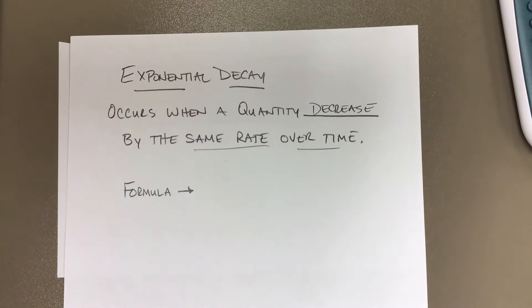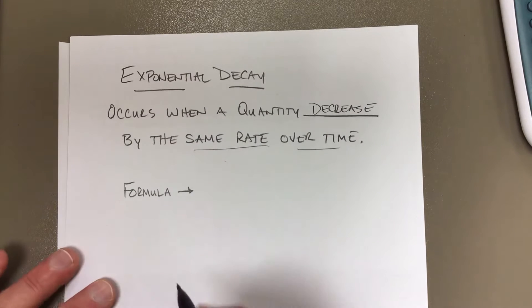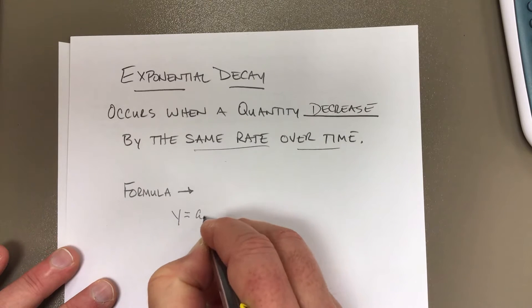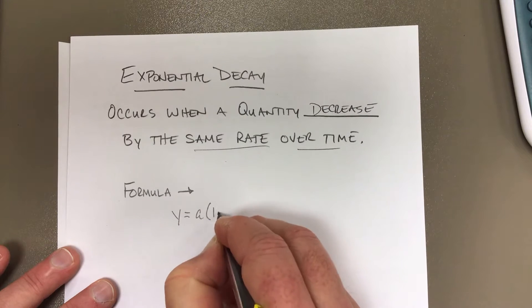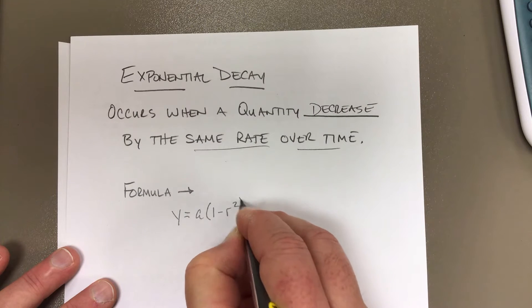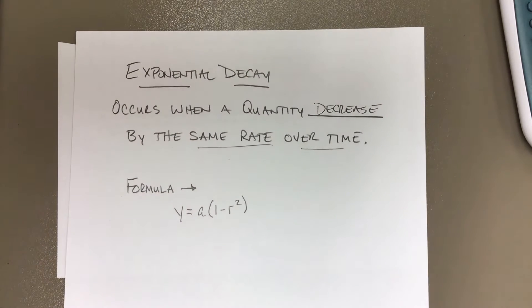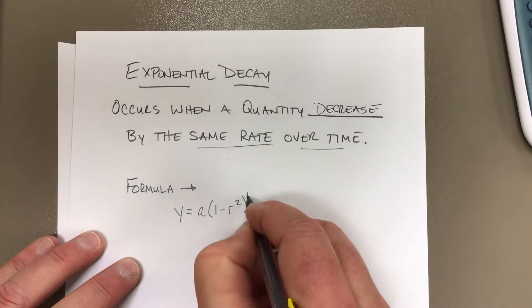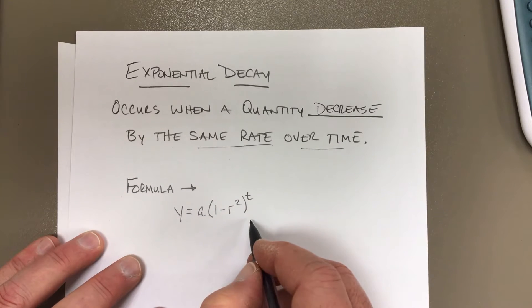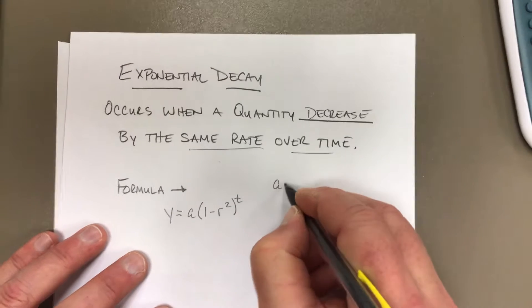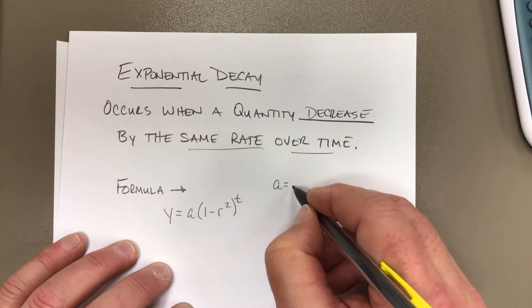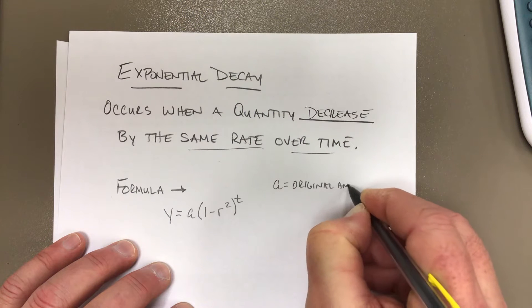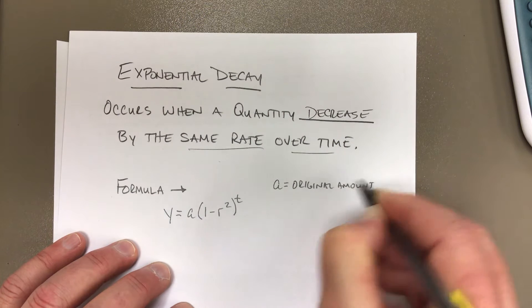All right, so there's a formula for this, so don't get too nervous about it. Y is equal to a times 1 minus r raised to the t power. So a times 1 minus r raised to the t power. All right, what does this mean? So a just means it's the original amount. That's where the a comes from, the original amount.